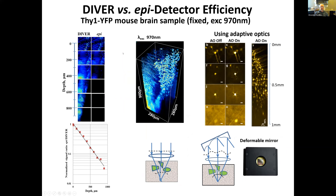We did the same experiment with actual brain tissue, imaging it with both DIVER and epi detectors. With the epi detector, images practically disappear after about 400–500 microns depth. With the DIVER detector, we still get pretty bright images. Also, at shallow depths the images are very sharp, but going deeper they become blurred — exactly due to wavefront distortion of the excitation beam that I described earlier. We used adaptive optics in our system, which improves the image quality at depth to some extent.